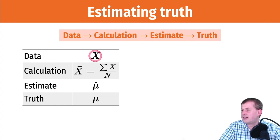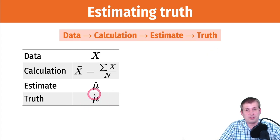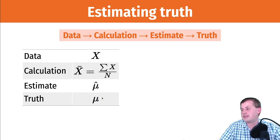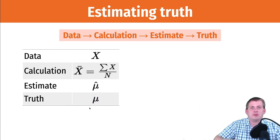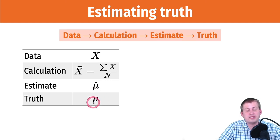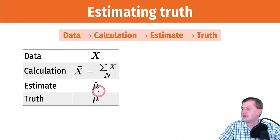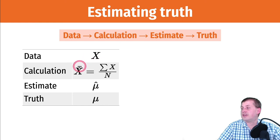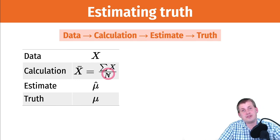For example, if we want to know average income in the country, there is some existing truth — represented by the Greek letter mu, typically used for averages. We have no idea what mu is in real life. The closest we get is mu-hat, our estimate. We take a random sample of people in the United States and calculate average income in that sample — that's our x-bar.